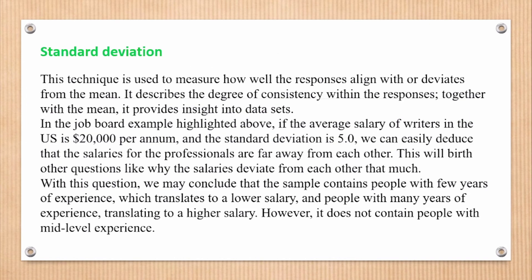The second statistical method is standard deviation. This technique is used to measure how well the responses align with or deviate from the mean. It describes the degree of consistency within the responses. In the job board example, if the average salary of writers in the US is $20,000 per annum and the standard deviation is 5.0, we can deduce that the salaries are far away from each other. This raises questions about why the salaries deviate so much — for example, the sample may contain people with few years of experience earning lower salaries and people with many years of experience earning higher salaries.